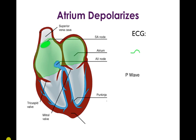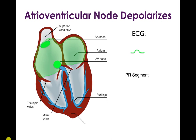Next, the atria depolarize, forming a P wave on the EKG. After that, the atrioventricular node depolarizes. The purpose of the AV node is really to serve as a timing device so that the atria can contract and fill the ventricles with blood before they squeeze — you want that timing delay. This AV node activity is electrically silent on the surface EKG, though a catheter in the electrophysiology lab can detect it. This timing corresponds to the PR segment on the EKG.